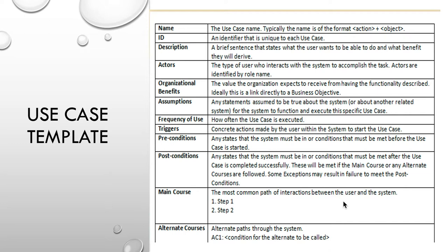Preconditions are important — what happens before this use case comes into execution? What conditions need to already exist? For example, in a banking system transferring funds, the preconditions might be that you've already logged in and been authenticated. Those things have to happen before you can transfer funds. Then there are postconditions — what happens when you've completely executed this use case successfully? In the banking example, it could be that your funds have been transferred, the balance reduced in one account and increased in another.